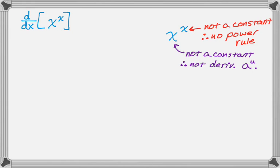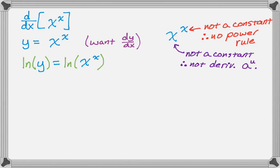So what we do instead is we kind of rewrite this problem, and we say let y equal x to the x. And it's called log differentiation because I'm going to take the log of both sides. So by log, I mean natural log. So I want dy dx. So here we go. Natural log of y equals natural log of x to the x.